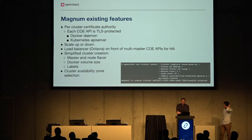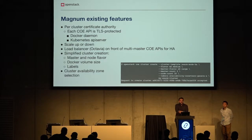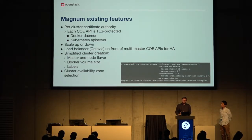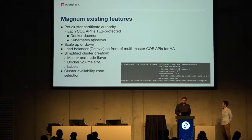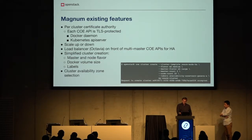Magnum's added value is managing credentials. Each COE — for example Docker Swarm, which is a combination of many Docker engines — exposes an HTTP API. We protect this API with TLS using a self-signed certificate authority. Similarly, Kubernetes has its own API server which we protect with the same mechanism, distributing certificates across all nodes. The nodes themselves talk to Magnum to retrieve the certificate rather than receiving sensitive certificate keys via user data.